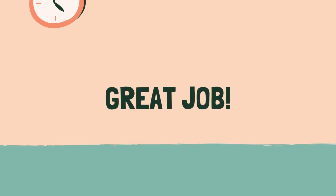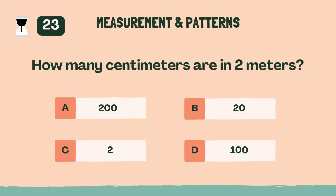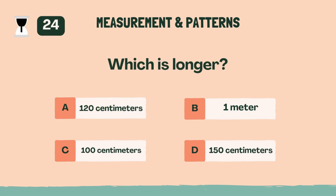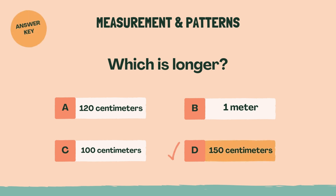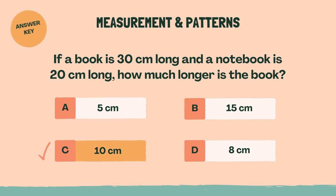Great job. Ready for some measurement and patterns? Category 4: measurement and patterns. Three, two, one, go. How many centimeters are in 2 meters? A, 200. Which is longer? D, 150 centimeters. If a book is 30 centimeters long and a notebook is 20 centimeters long, how much longer is the book? C, 10 centimeters.